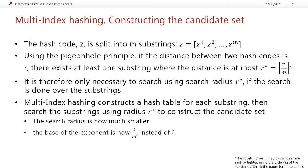The hash code is split into m substrings of equal length. Then, using the pigeonhole principle, if the distance between two hash codes is r, there must exist at least one substring where the distance is at most r divided by m, which we denote r*. When searching within a substring, we therefore only need to use search radius r*. Multi-index hashing utilizes this by constructing a hash table for each substring and doing radius search within each substring to construct the candidate set. The base of the exponent is now l divided by m instead of l, where l is the length of the hash code.